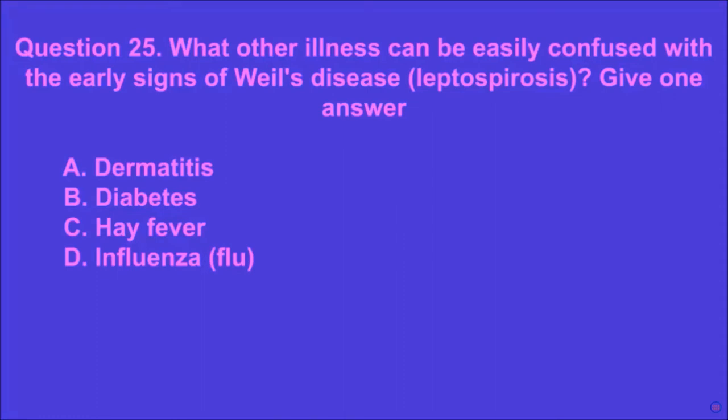Question 25: What other illness can be easily confused with the early signs of Weil's disease (leptospirosis)? Give one answer. A: dermatitis, B: diabetes, C: hay fever, D: influenza (flu). D is the correct answer.